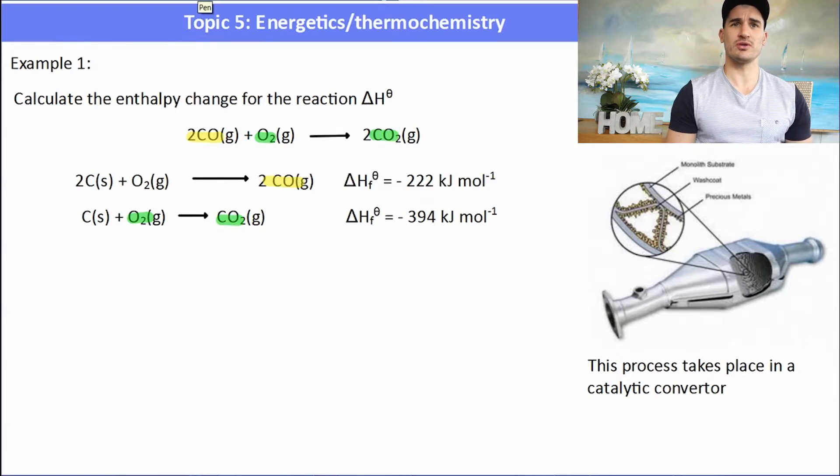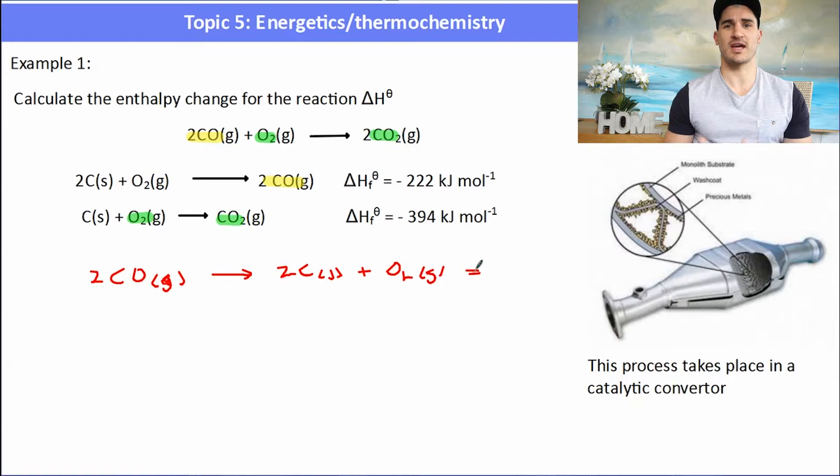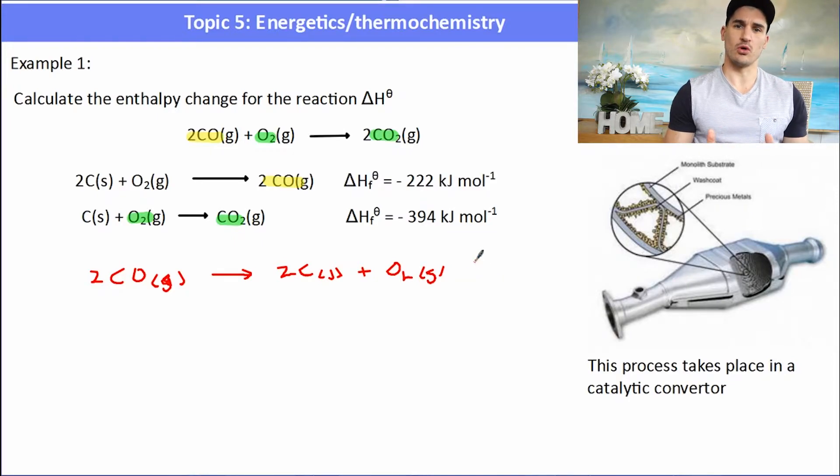Now what I want to do is manipulate these equations to get those reactants on the correct sides. So the first thing I can do is flip the first equation. I'm going to reverse it. That gives me my CO on the right, the correct side, and that means that I just need to change the delta H. When I reverse a reaction, the delta H becomes the opposite sign. So it's plus 222 kilojoules per mole. So all I've done is reverse that first equation to get the CO to be a reactant.